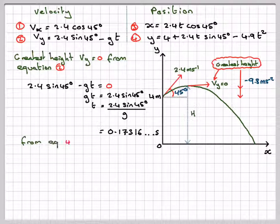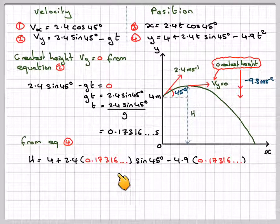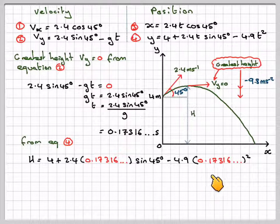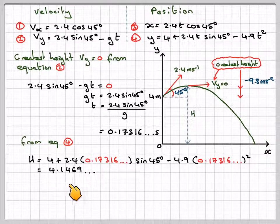To find the greatest height, we need to now put this into here, the vertical height. So my value of t in. Don't round off prematurely. So I've got 4 plus 2.4 times 0.17316 sin 45 for this bit here, minus 4.9 times 0.1731 squared.